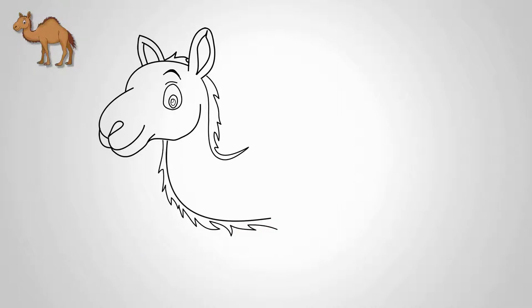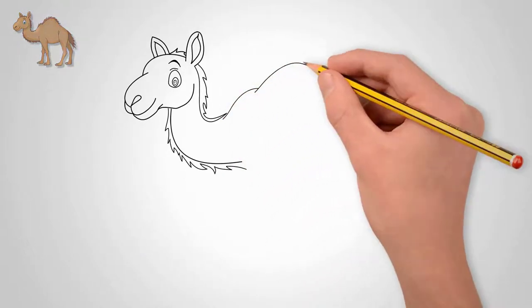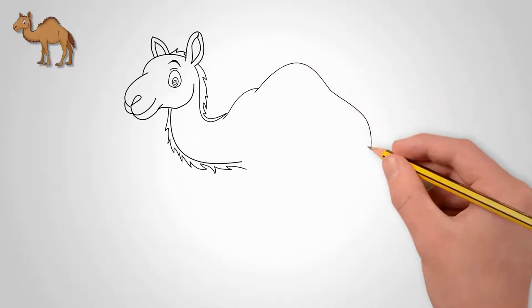Next, draw the body of a camel. Draw one hump on top. Our camel is one hump. Draw wool on top of the body.